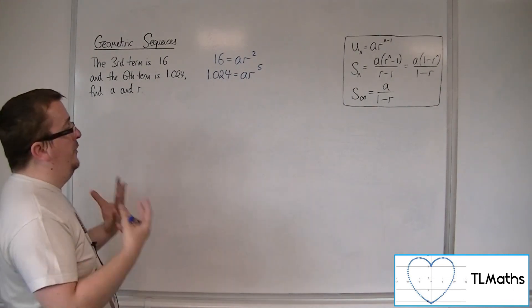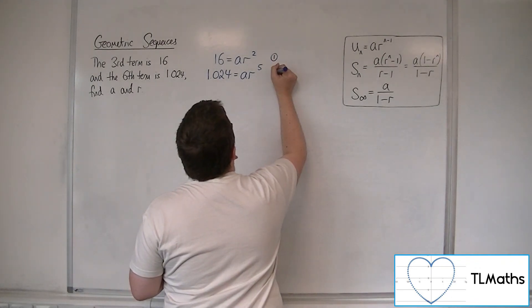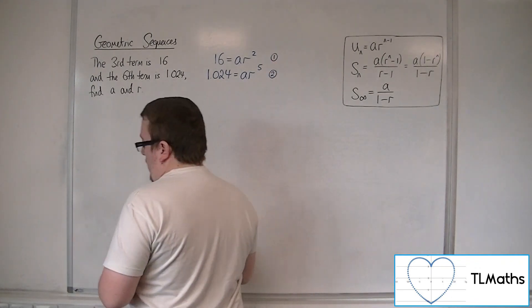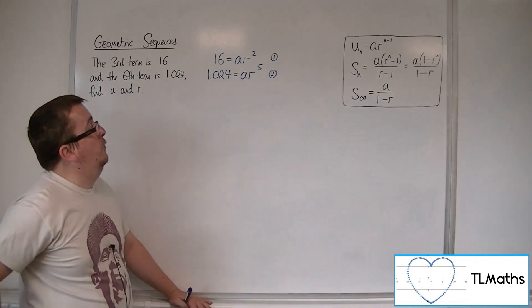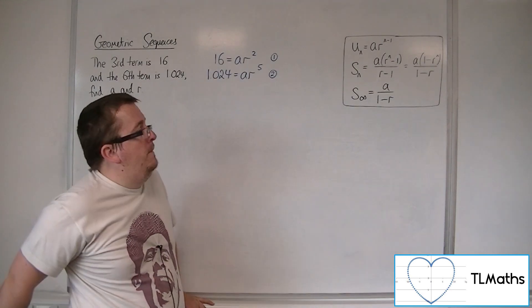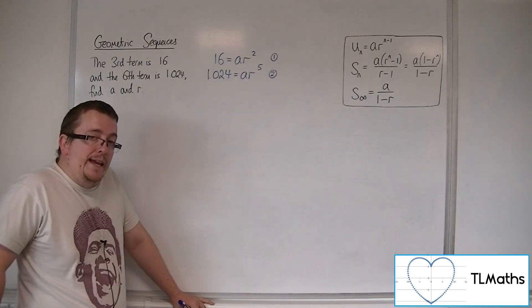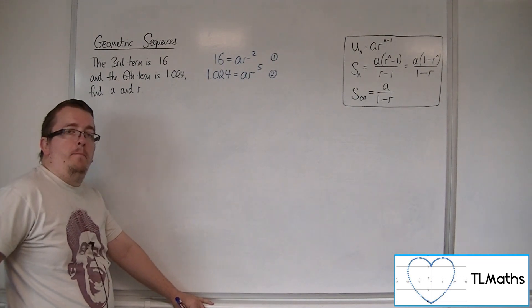So we now have two equations with two unknowns, a and r. Now you may be a little unused to solving equations of this format. What you can do, in order to eliminate the a in this case, is to divide one equation by the other.